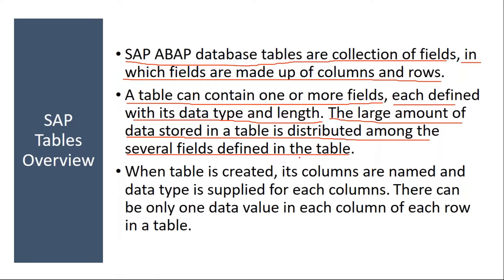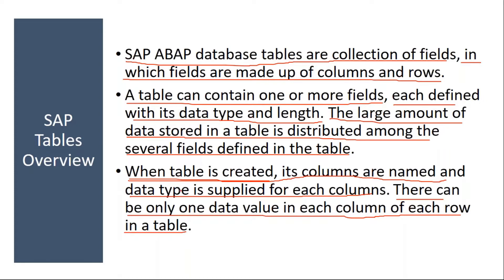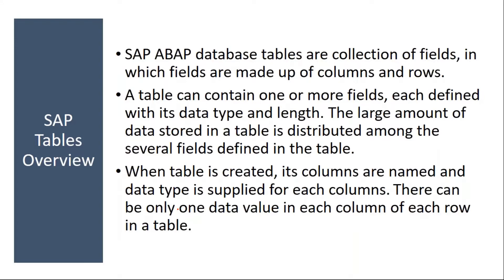The large amount of data stored in a table is distributed among several fields defined in the table. There are already standard tables. On top of that, if required, the ABAP technical team can create custom tables. When a table is created, its columns are named and a data type is supplied for each column. There can be only one data value in each column of each row. Our discussion is limited to the standard tables.